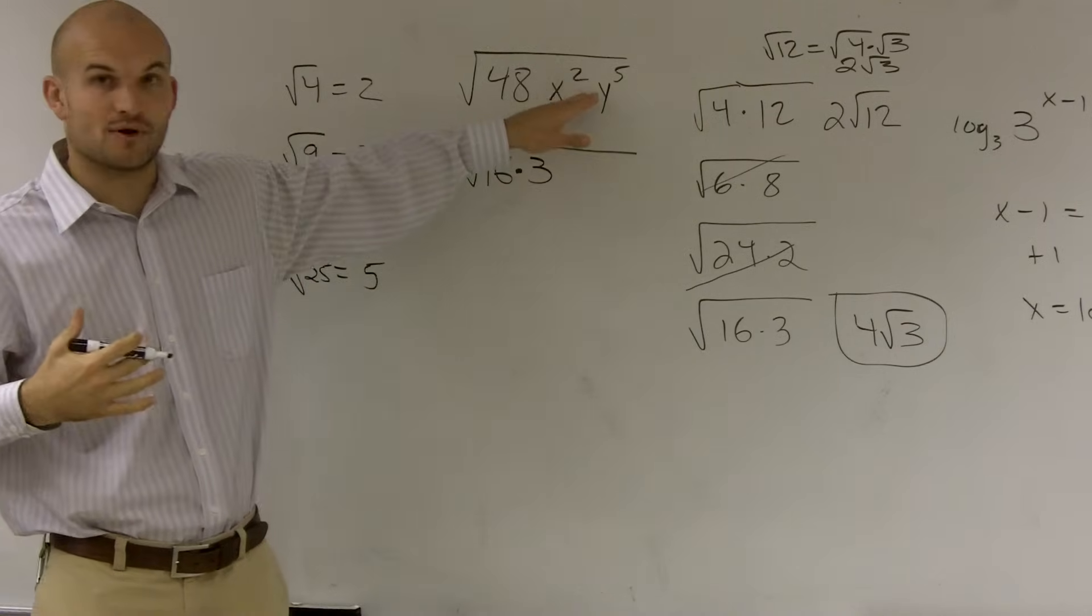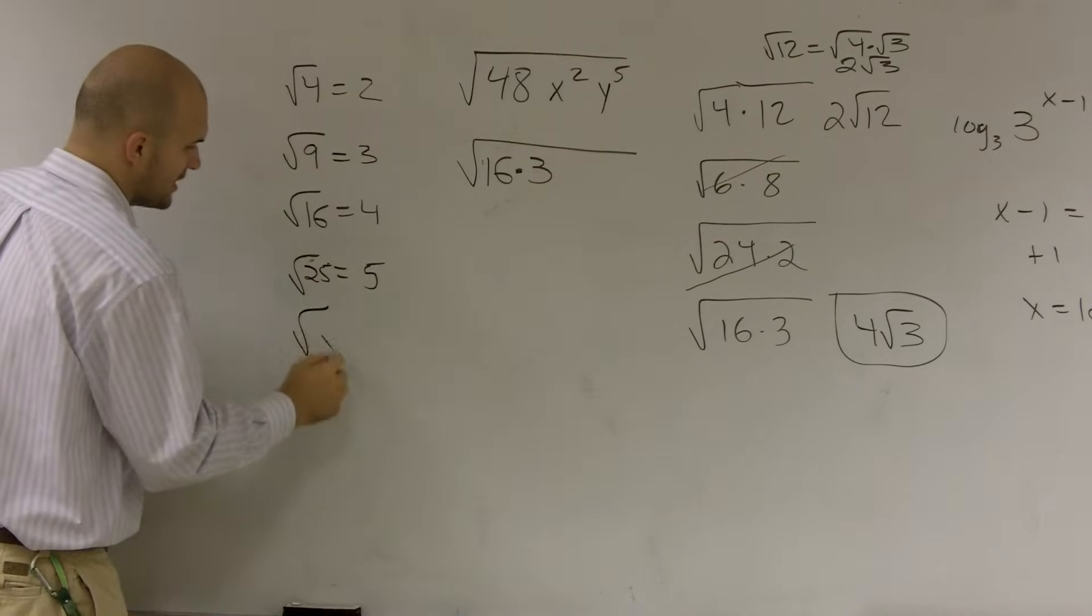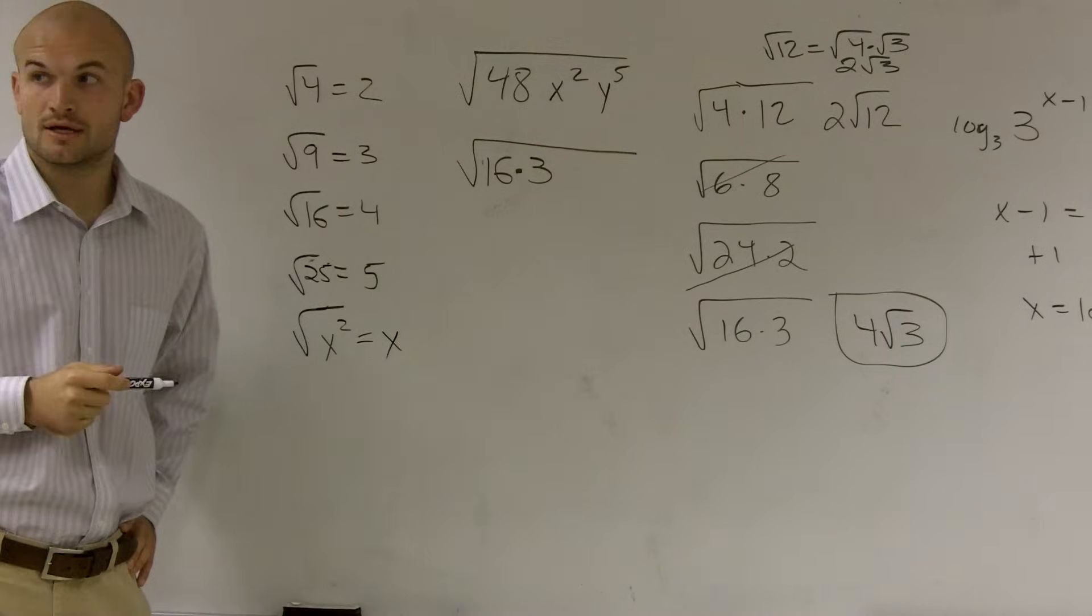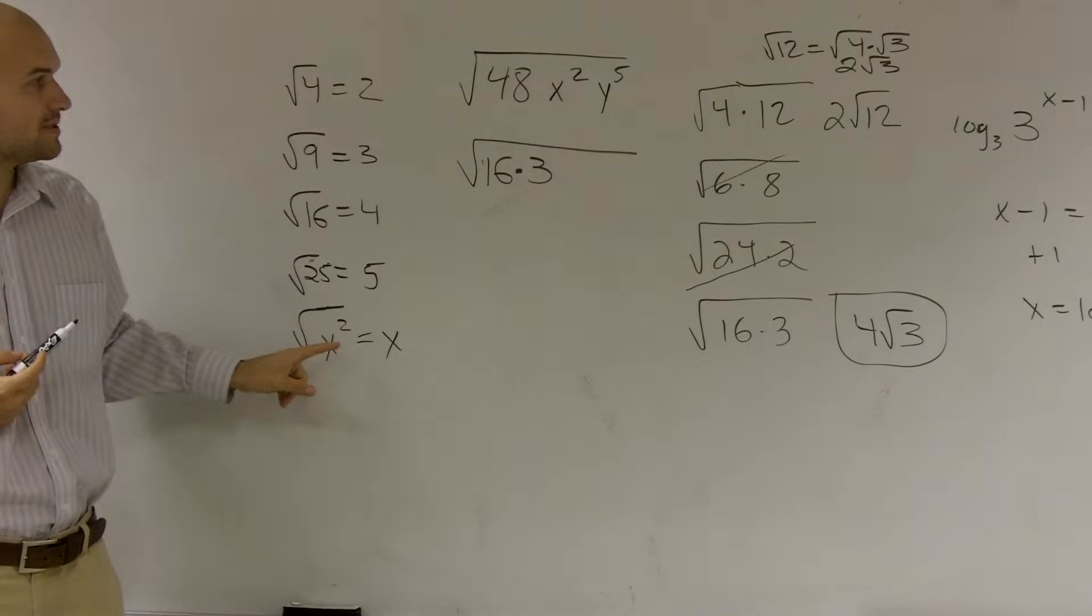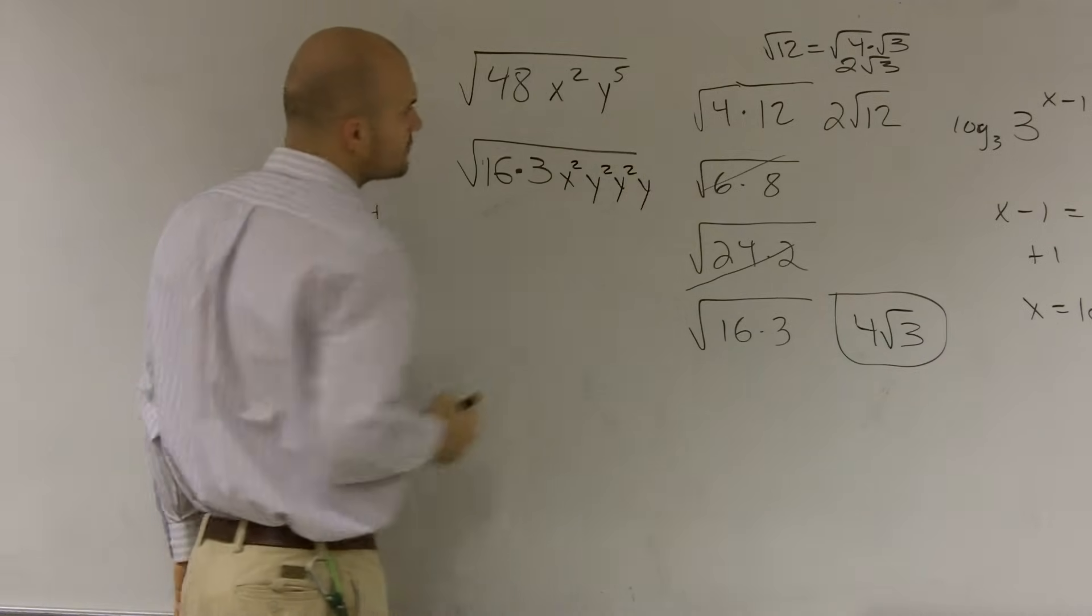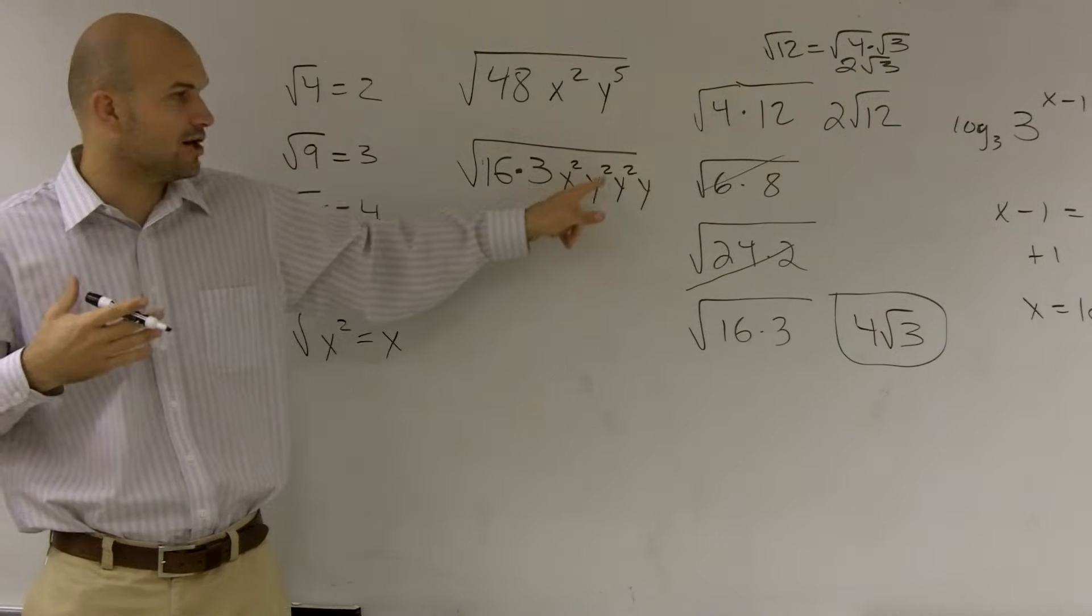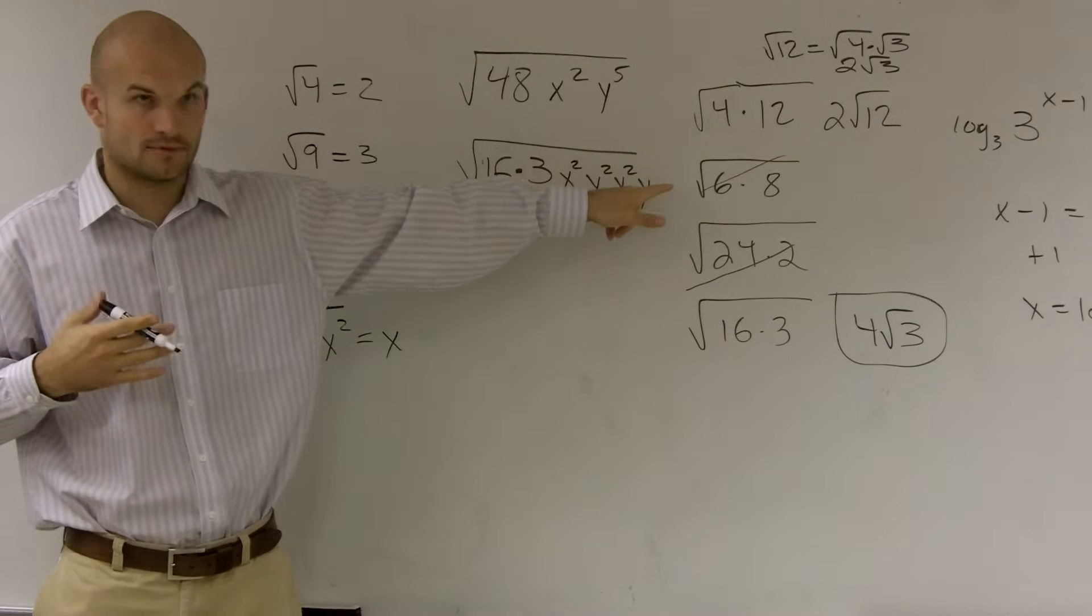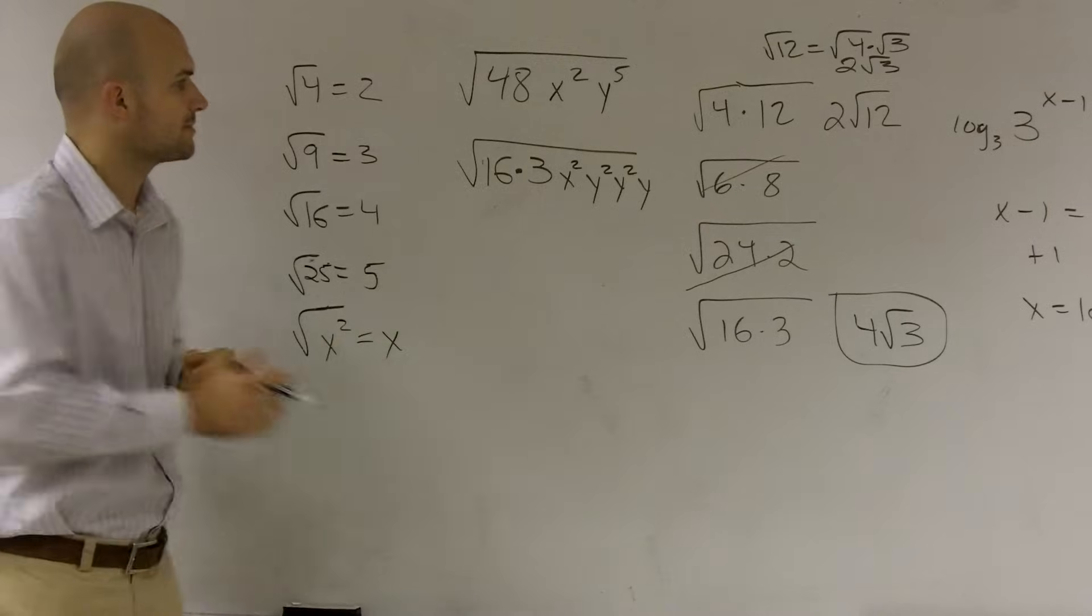So what I have is 16 times 3. Now, when you're dealing with numbers with exponents, that's a little bit different. You guys should know that square root of x squared is just going to equal x. So what we want to do is see if we can pair these with as many squares as we possibly can. So I can write this as x squared, y squared times y squared times y. Why is there that extra y there? Remember, when you're multiplying numbers with exponents, you're adding the exponents. So this is 2 plus 2 plus 1. When you multiply, you add the exponents. So that's why I separate this one a little bit differently.